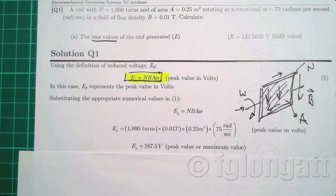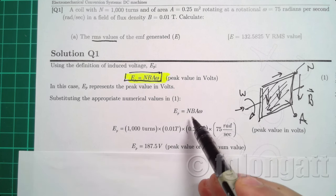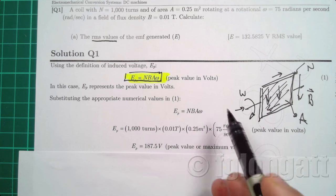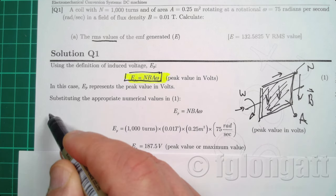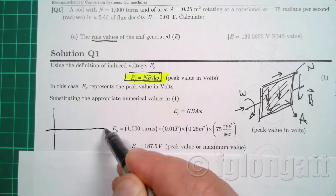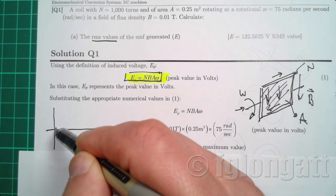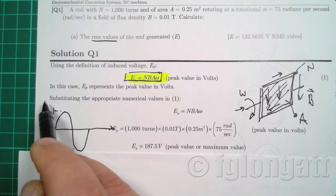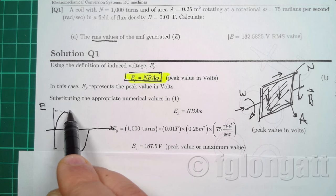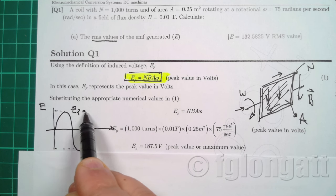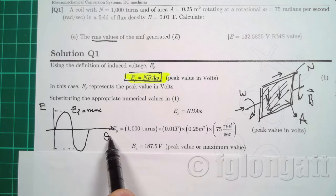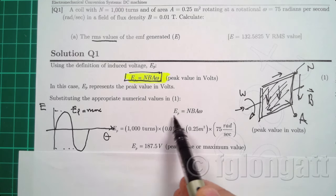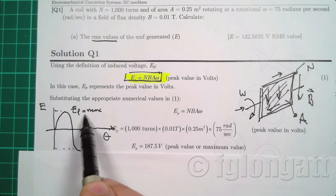So to obtain the induced voltage is basically substituting these numbers over here. But what you need to understand is that when this coil is rotating, this is inducing a perfect sine wave. So with this equation, what we are calculating is the maximum value or the peak value of that sine wave.